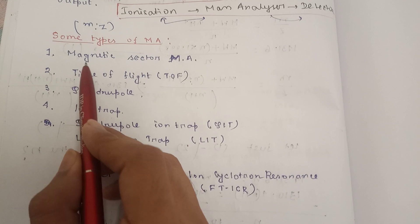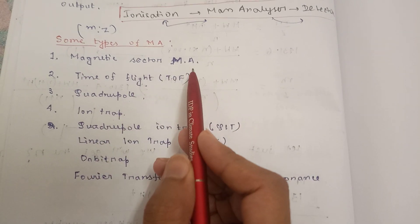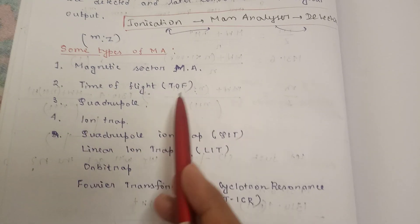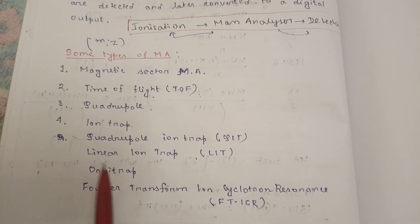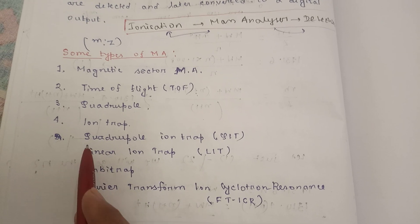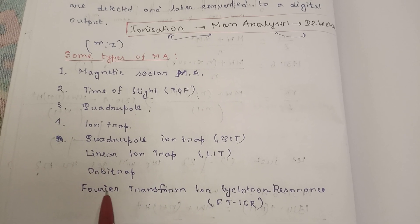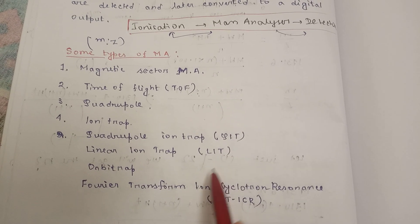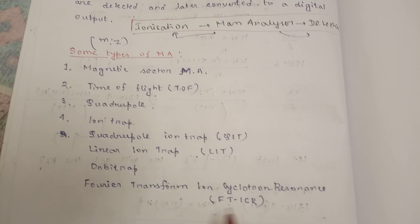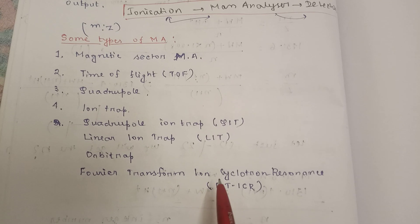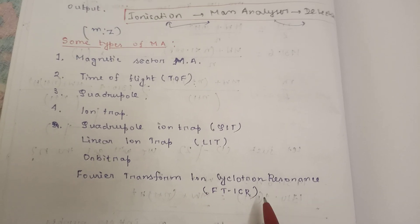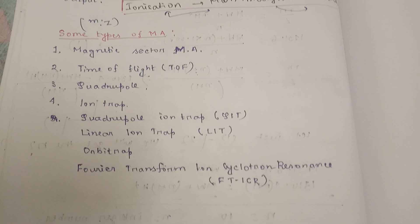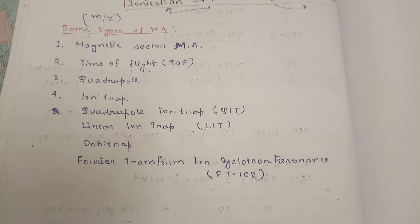There are many types of mass analyzers: magnetic sector mass analyzer, time of flight (TOF), quadrupole, ion trap. Some types of quad ion traps include QIT, LIT, Orbitrap, and Fourier transform ion cyclotron resonance. First of all, we will learn about the magnetic sector mass analyzer.